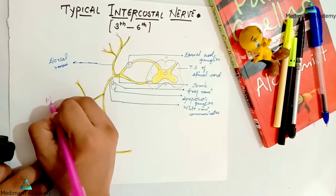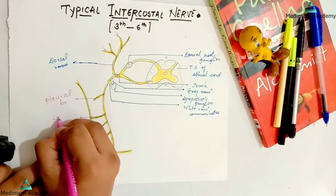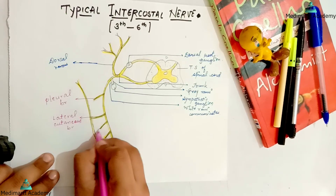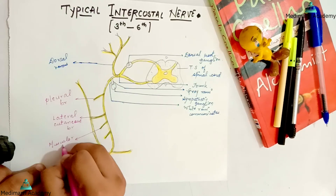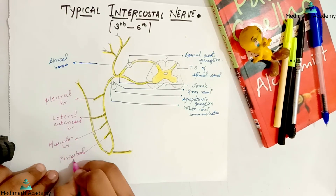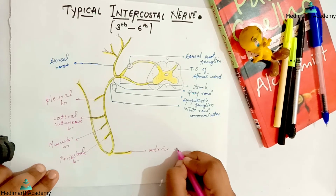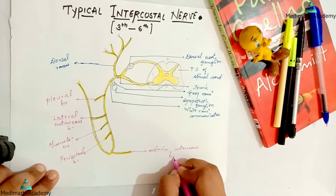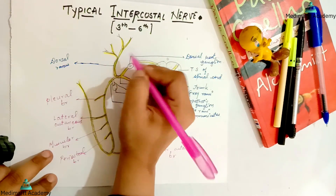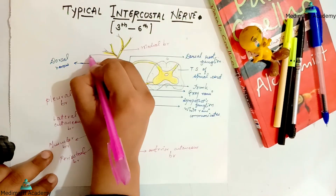This is our pleural branch. This is our lateral cutaneous branch. This is our muscular branch, supplying the muscles. This is the terminating branch of the intercostal nerve — that is the anterior cutaneous branch. Then we label the dorsal ramus: this is going to be the medial branch of the dorsal ramus, and this is the lateral branch of the dorsal ramus.